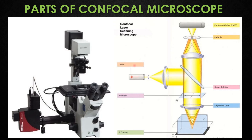The scanning system is responsible for moving the laser beam over the sample in a raster pattern, which produces an image. It is typically based on a galvanometer or acousto-optic modulator. The beam splitter separates the excitation light from the emitted light in the fluorescence beam, and is a major part of the microscope.